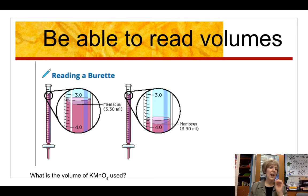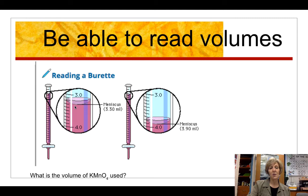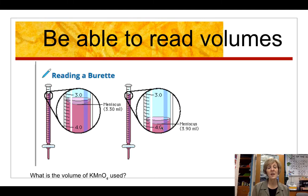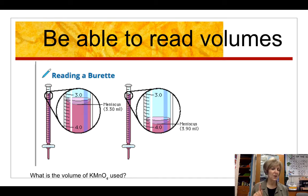Let's say you started with one volume of potassium permanganate and ended with another — pause the video and calculate what volume was used in the titration. The answer is 0.6 milliliters.